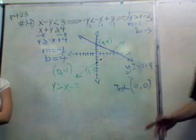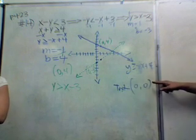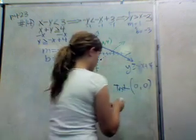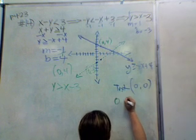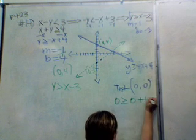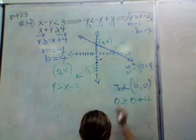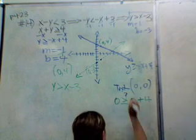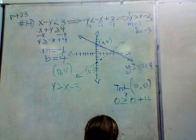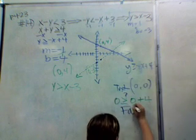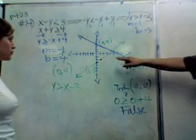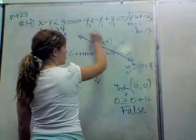To find where to shade, we test the point (0, 0). For y is greater than or equal to negative x plus 4, we get 0 is greater than or equal to 0 plus 4, which simplifies to 0 is greater than or equal to 4. That's false, so we do not shade toward (0, 0) — we shade away from it, upward.